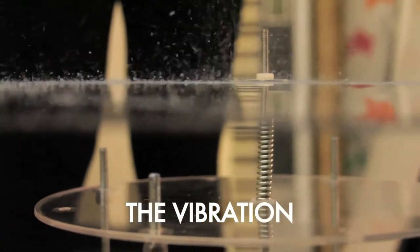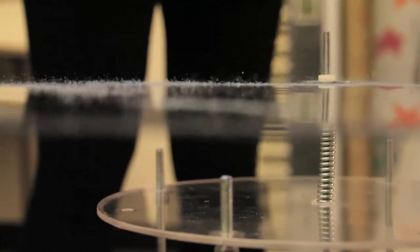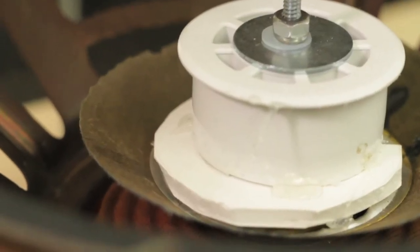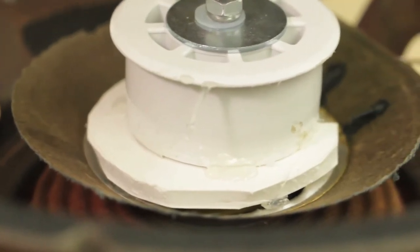At this point, electricity is converted to vibrations, and this energy powers the rest of the interaction. The diaphragm is removed to access the vibrating coil at the center of the speaker.